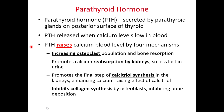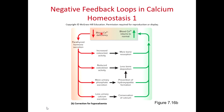Parathyroid hormone can raise blood calcium levels by four mechanisms. When blood calcium is low: it makes osteoclasts more active to dissolve bone and release calcium; it reduces osteoblast activity so less calcium is stored in bone; it increases calcium reabsorption in the urinary system; and it causes more phosphate to leave the body through urine, making it harder to form calcium hydroxyapatite, which also reduces bone deposition.